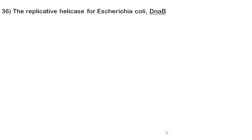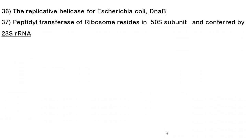Thirty-sixth question: the replicative helicase for E. coli is DnaB. DnaB is a hexameric motor protein that acts as a helicase at the replication fork, separating the parental strands during prokaryotic DNA replication.